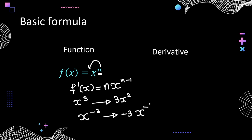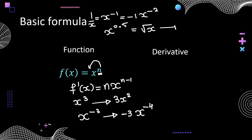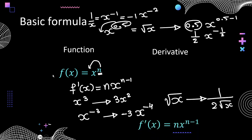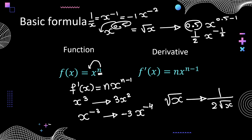Similarly, the derivative of x^(-1), which is the same as 1/x, is -1·x^(-2). This formula is not restricted to integers. Suppose if I have x^(0.5), which is √x, the derivative is 0.5·x^(0.5-1), which is (1/2)·x^(-1/2). So the derivative of √x is 1/(2√x). This is a standard formula and we can apply it for any real number value of n.